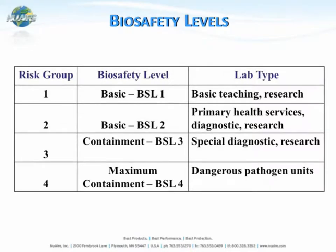When you apply these risk groups to biosafety levels, risk group 1 would typically fall into BSL level 1, which is appropriate for work with defined and characterized strains of microorganisms not known to cause disease in healthy adult humans. Risk group 2 falls into BSL 2, appropriate for a broad spectrum of indigenous moderate-risk agents present in the community and associated with human disease of varying severity. Risk group 3 falls into containment BSL level 3, appropriate for indigenous or exotic agents with potential for respiratory transmission that may cause serious and potentially lethal infection.